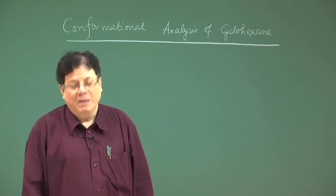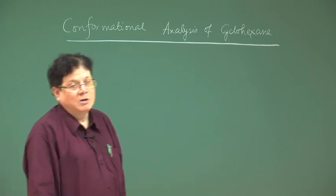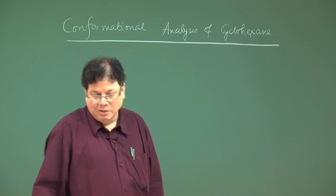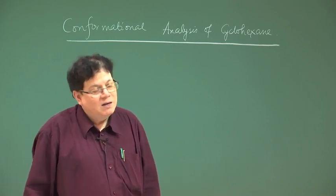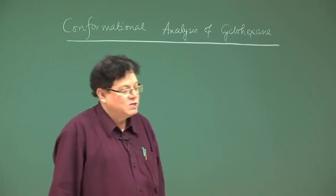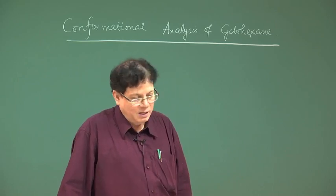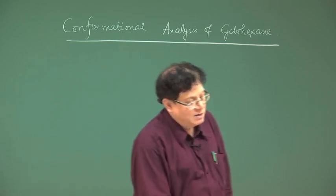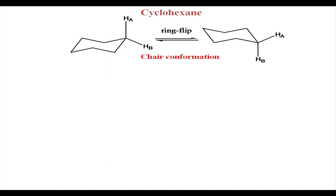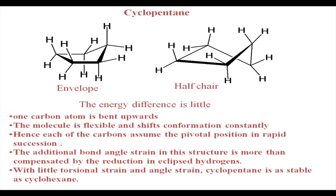In cyclopentane, the molecule is not planar. Although the angle strain is very little, the molecule prefers to adopt a non-planar geometry called the puckered form. Cyclopentane exists in two types of conformations: one is called the envelope and the other is called the half chair.